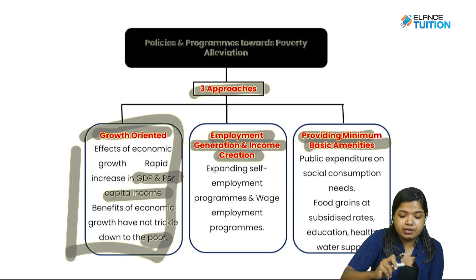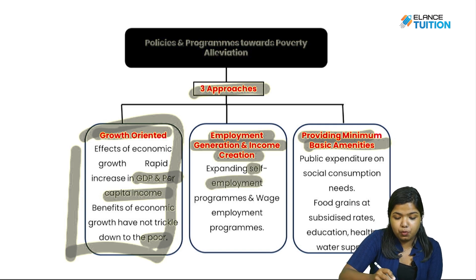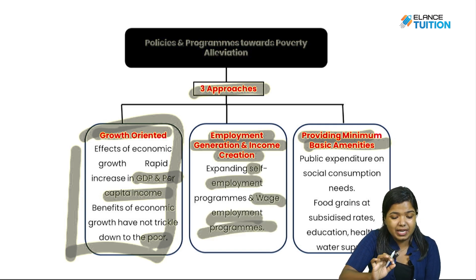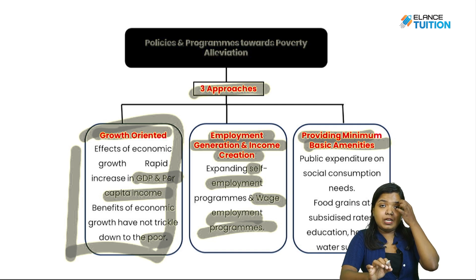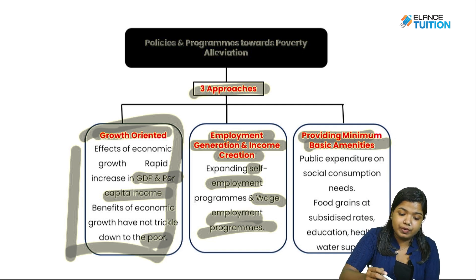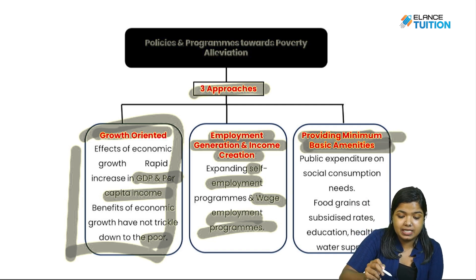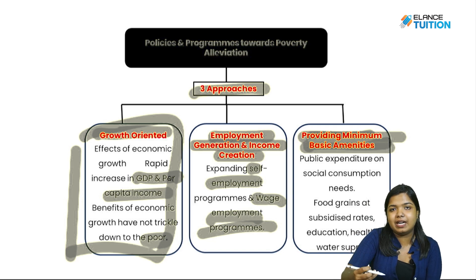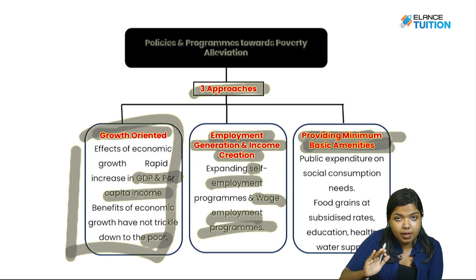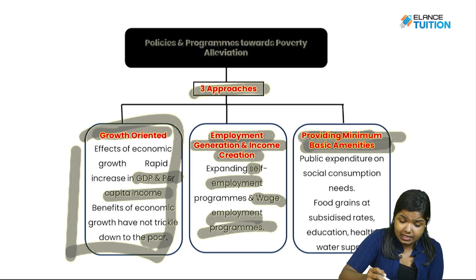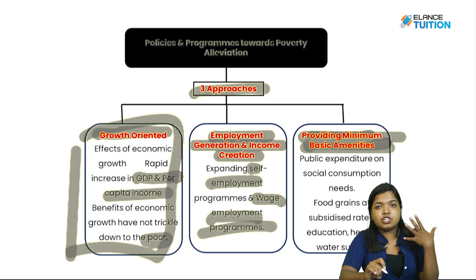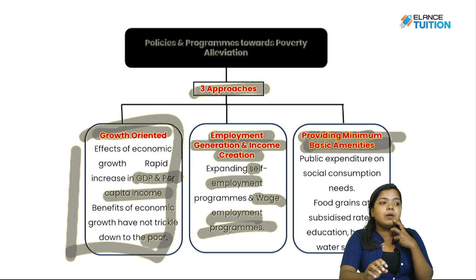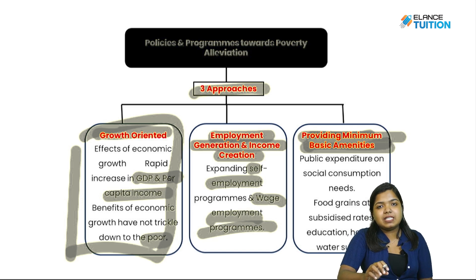Employment generation and income creation means expanding self-employment programs and wage employment programs. Providing minimum basic amenities is the basic idea of the government — public expenditure on social consumption needs. For example, if you go to a ration shop, you have food and rations, which are the minimum basic amenities provided by the government.